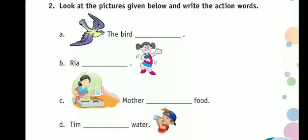Now look at the pictures given below and write the action words. We are going to look at the pictures and tell what action words they show. The bird — what does it do? The bird flies — F-L-I-E-S. The bird flies.